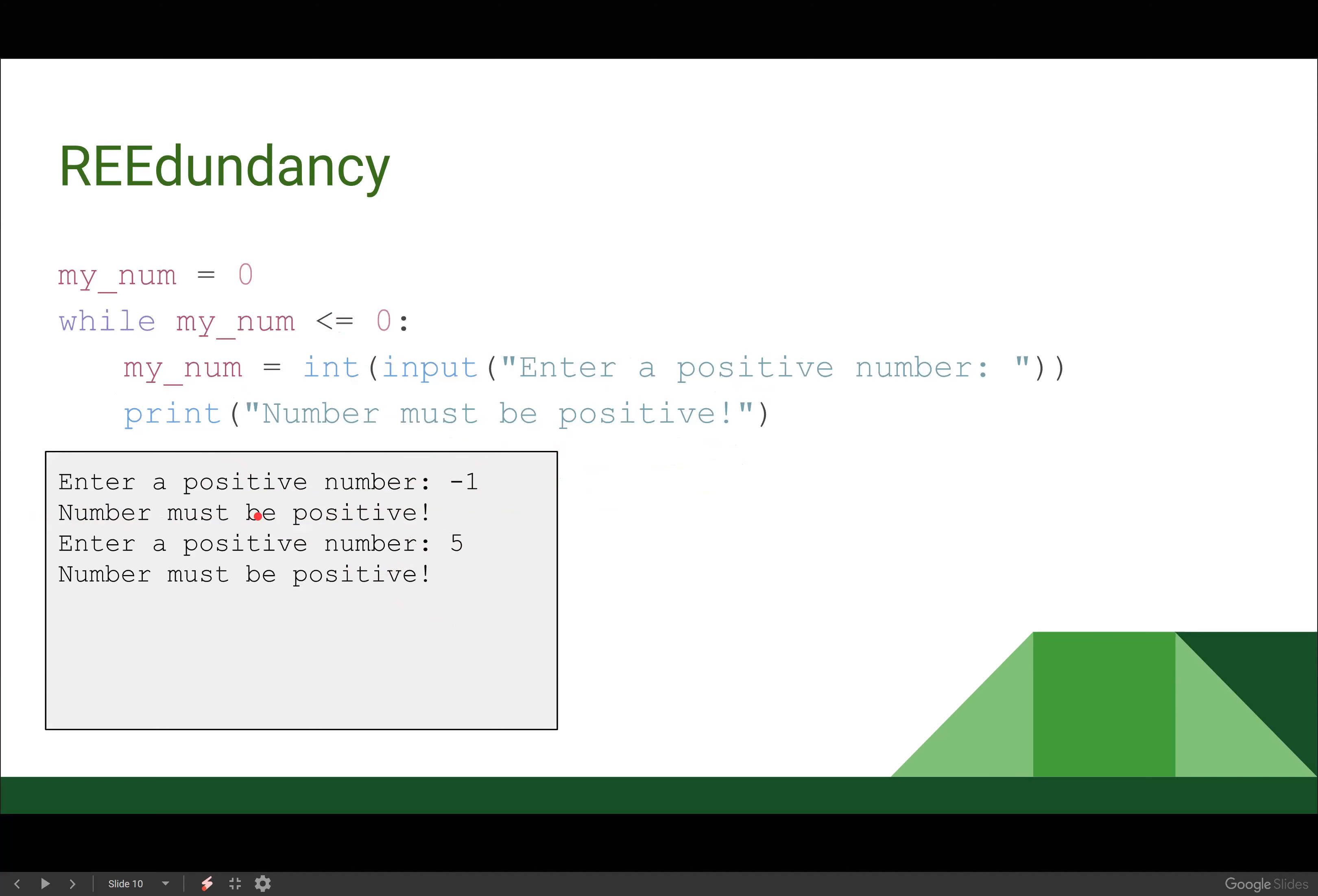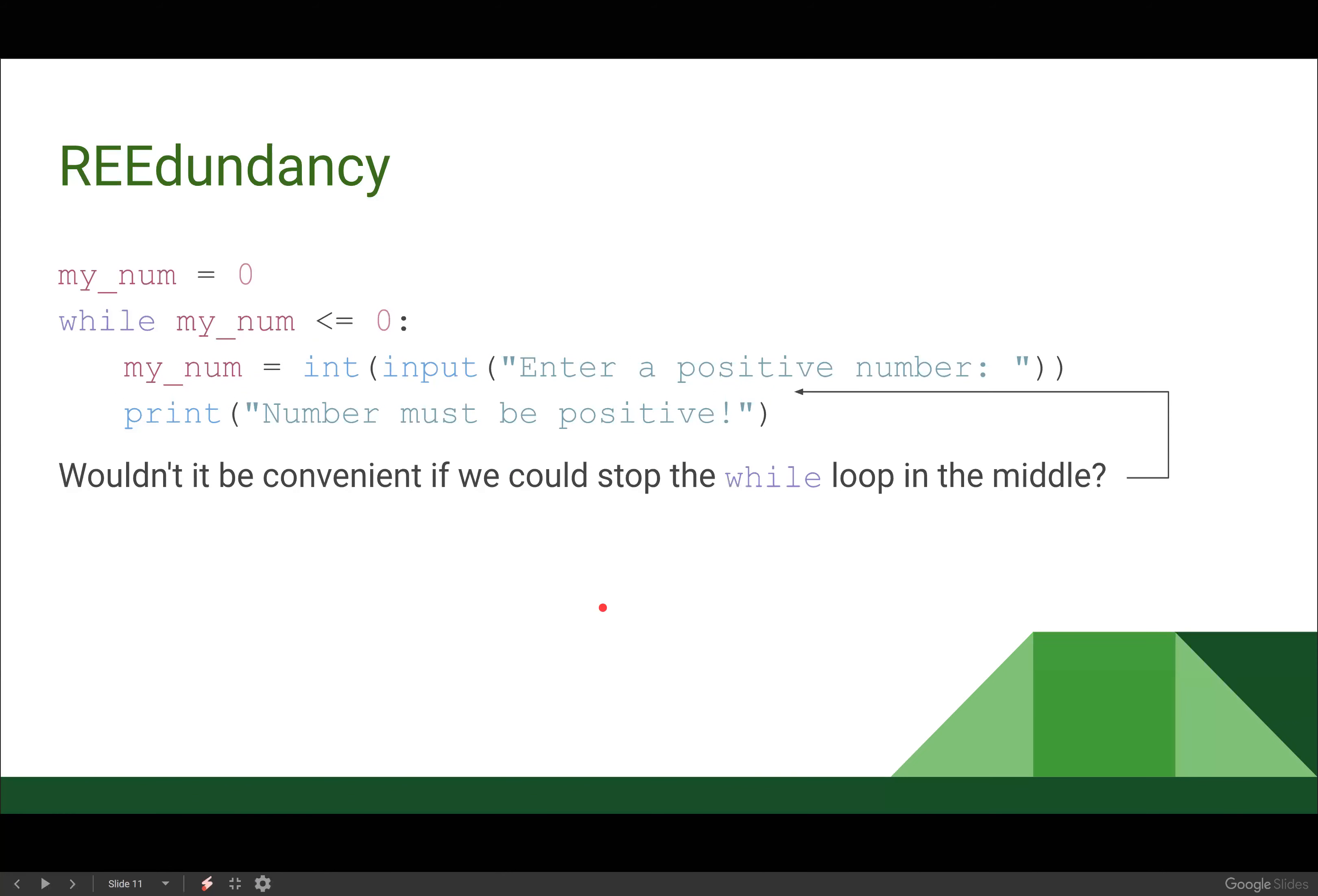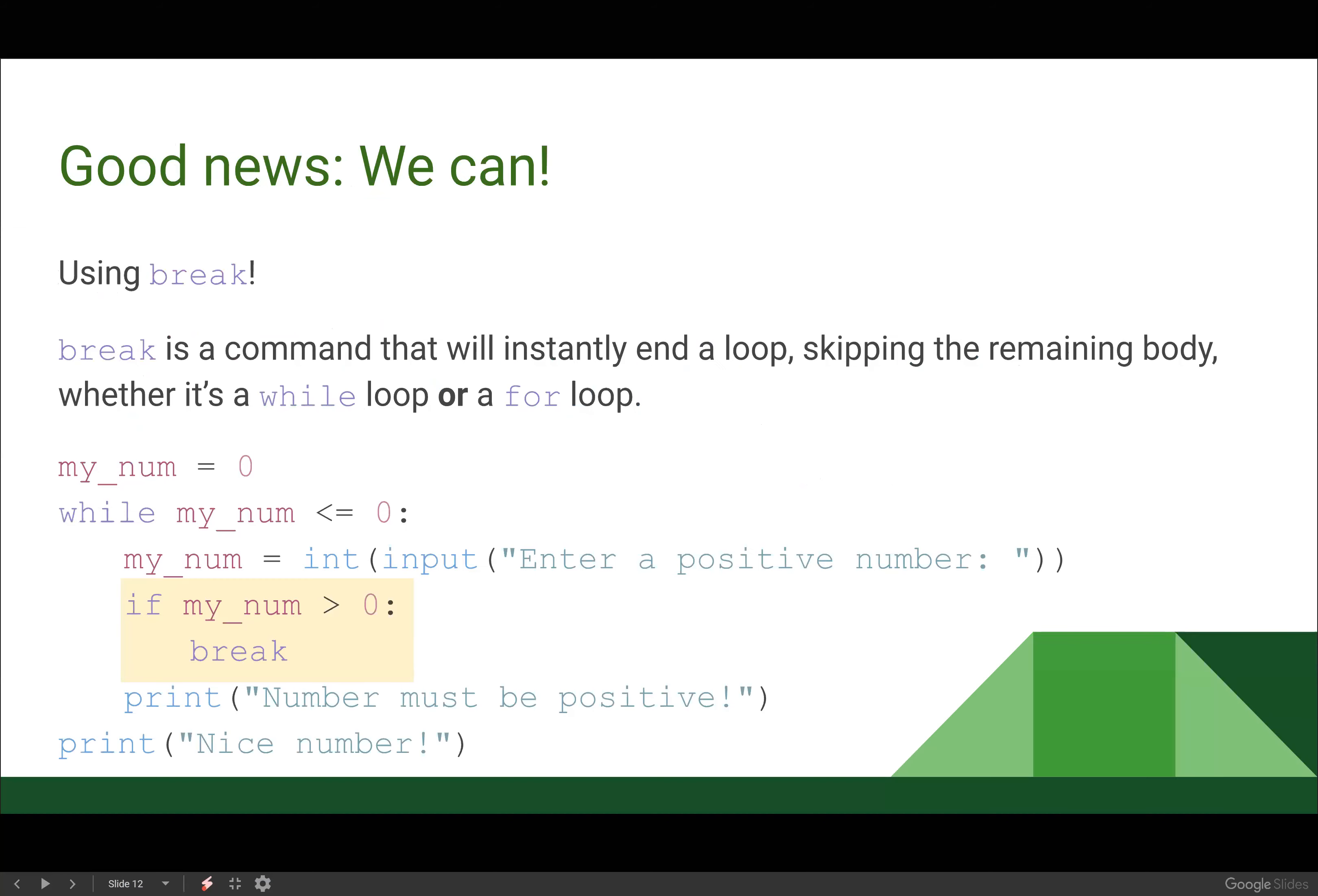So this one also not a great solution because I'm seeing that number must be positive when I don't really want or need to see it. So wouldn't it be convenient if we could stop the while loop in the middle? It sure would. And good news.